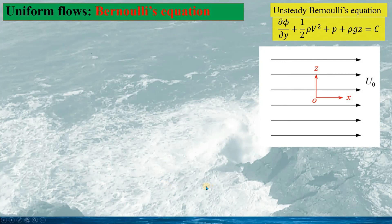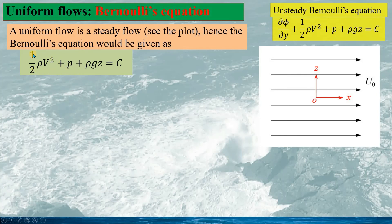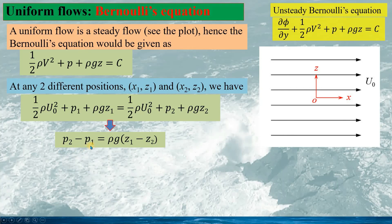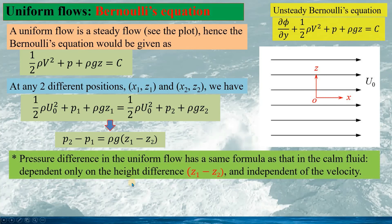Finally, Bernoulli's equation is applied to the uniform flow. Since it is a uniform flow, the Bernoulli equation for potential flow can be written accordingly. Considering two positions (x1, z1) and (x2, z2) in the fluid and applying Bernoulli's equation, we can obtain the pressure difference P2 − P1. In a uniform flow, the pressure difference has the same form as that in calm fluid — it depends only on the height difference z1 − z2, and is independent of the velocity, since no velocity term appears in the expression.